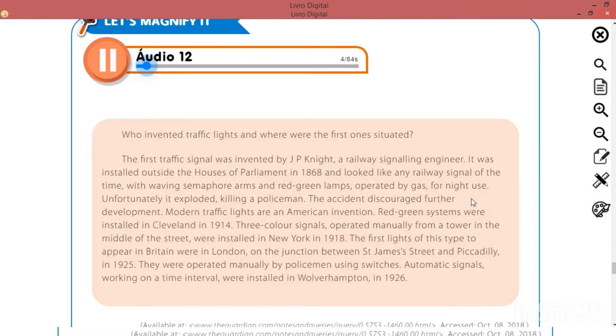Quem inventou o traffic light? E onde foram os primeiros situados? O primeiro traffic signal foi inventado por J.P. Knight, a railway signalling engineer. It was installed outside the Houses of Parliament in 1868 and looked like any railway signal of the time, with waving semaphore arms and red-green lamps operated by gas for night use. Unfortunately, it exploded, killing a policeman. The accident discouraged further development.